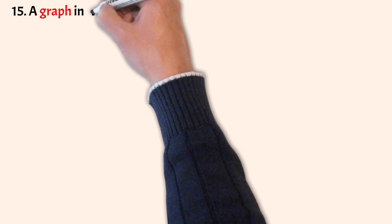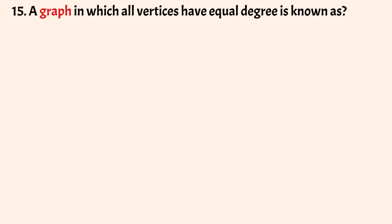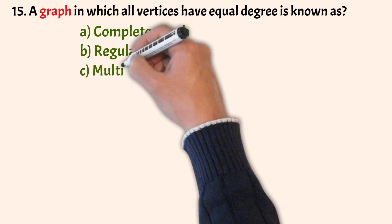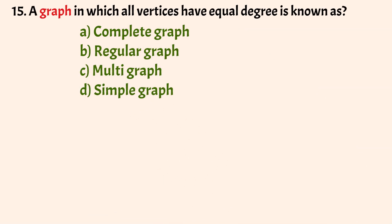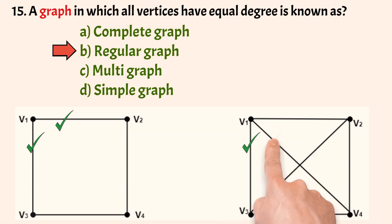The next question: a graph in which all vertices have equal degree is known as? The options are: complete graph, regular graph, multi graph, simple graph. The correct answer is Option B, that is regular graph. A graph in which every vertex has the same degree or the same number of neighbors is a regular graph. In this example, every vertex has the same degree — V1, V2, V3, and V4 all have the same degree.